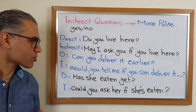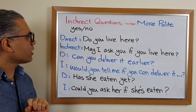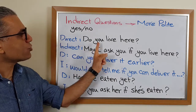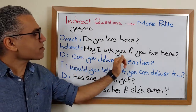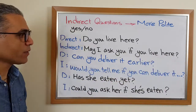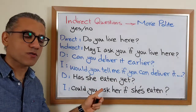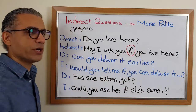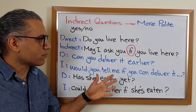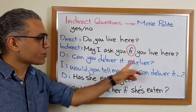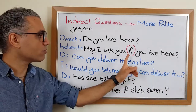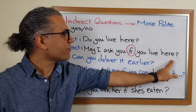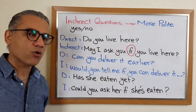Now about yes or no questions. Again, three examples. The rule is the same — you change the structure of a question into the structure of a statement. 'Do you live here?' becomes 'May I ask you if you live here?' The difference between indirect yes or no questions and indirect WH questions is this 'if' in between. For WH questions you have a WH word; for yes or no questions you replace it with 'if.' So we don't use the auxiliary verb anymore.